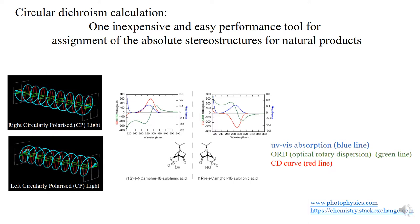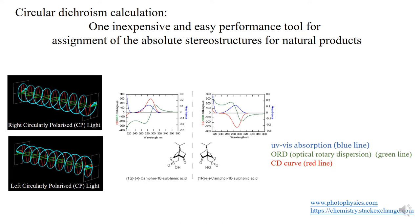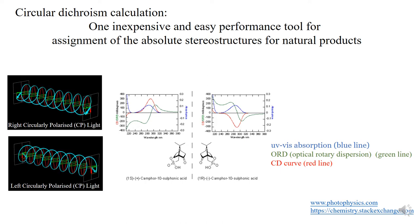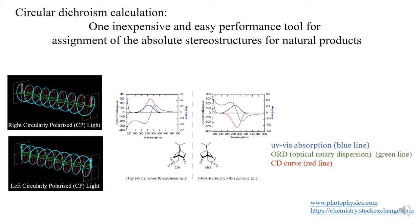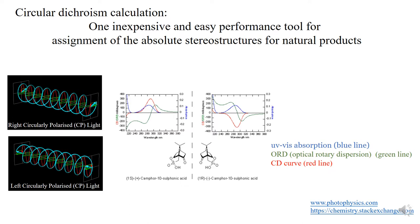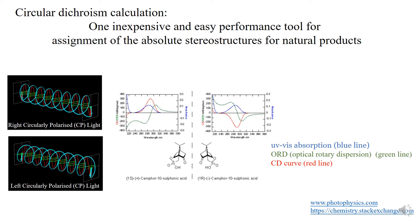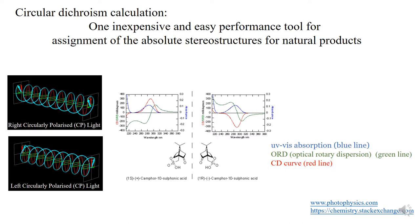There are three different spectra of both enantiomers of camphor sulfonyl acid. The blue lines are the UV-visible absorption, the green curves are the ORD spectrum, and the red lines are the CD spectrum. For both enantiomers, their UV-visible absorptions are the same, while the ORD and CD spectra for one enantiomer are mirror images of the same curves for the other. Different from the ORD, the CD absorption only happens at the same wavelength as the UV-visible absorption.